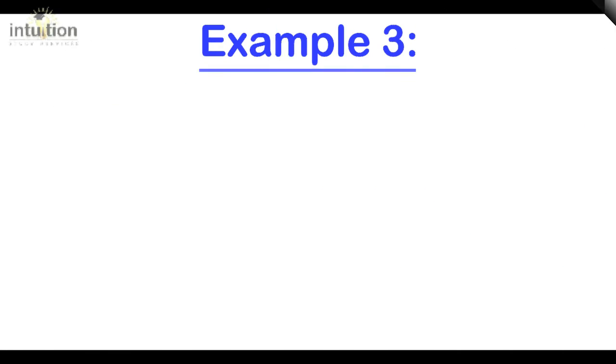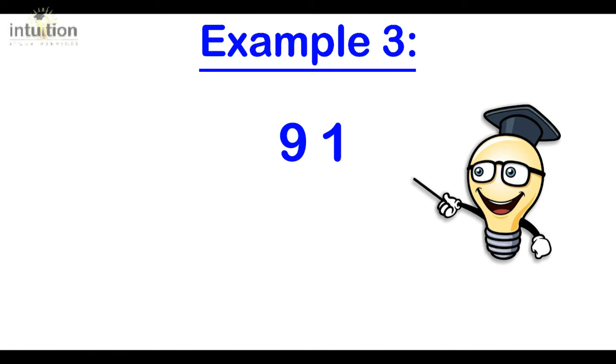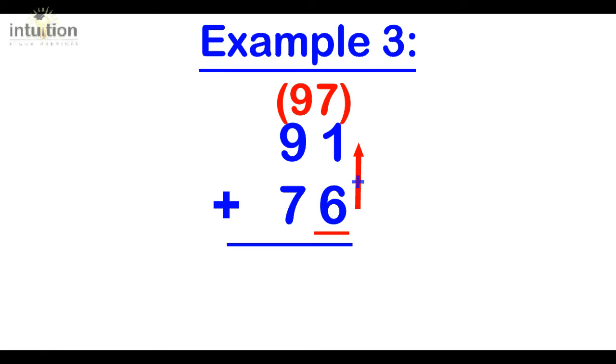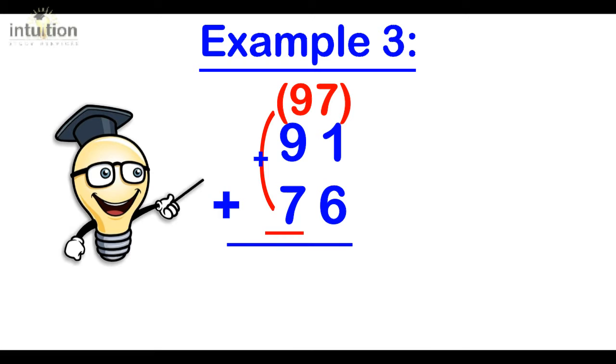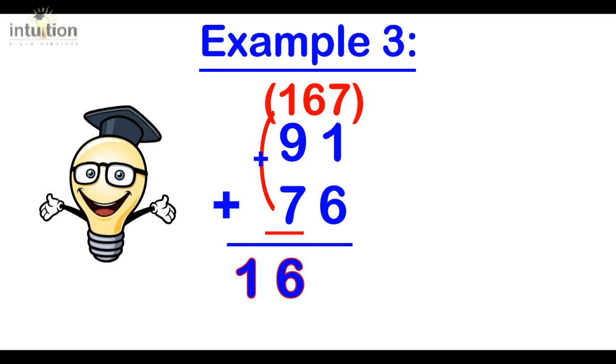Let's take a look at another example. Let's consider 91 plus 76. Okay, so first what we do is we add 6 units to 91 which gives us 97. Then we add 7 tens or 70 to 97 making 167.